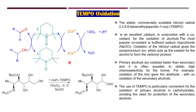TEMPO works in conjunction with co-oxidants. The most common co-oxidants are ceric ammonium nitrate (CAN) and buffered sodium hypochlorite (NaOCl). Oxidation of the nitrosyl radical gives the oxoammonium ion, which acts as the actual co-oxidant for the alcohol to form the carbonyl product. The oxoammonium ion is the key reactive species in this mechanism.